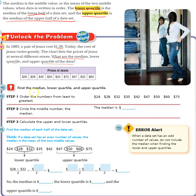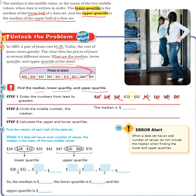Find the median, lower quartile, and upper quartile. Order the numbers from least to greatest. Circle the middle number — that's the median. Go to each end and cross out one on each end until you get to the middle. So $42 is the median.